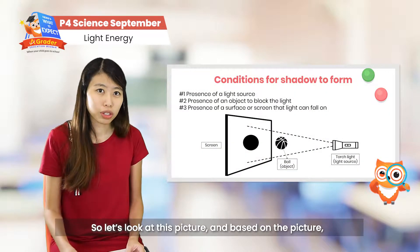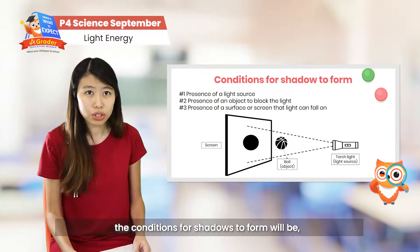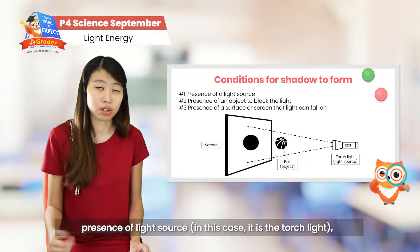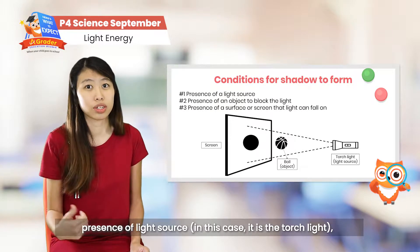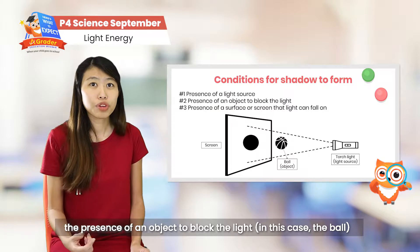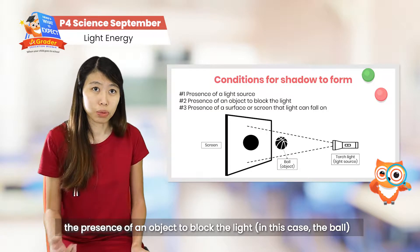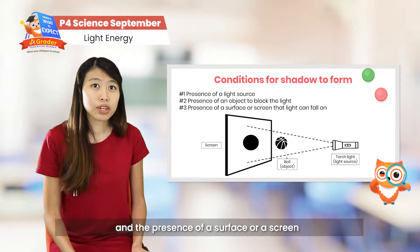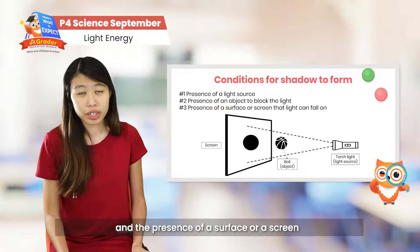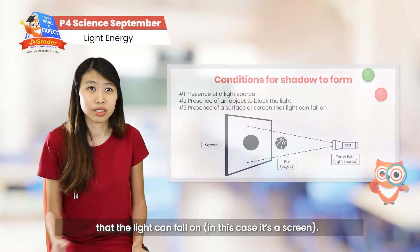Based on the picture, the conditions for shadows to form are: presence of a light source — in this case a torchlight; presence of an object to block the light — in this case the ball; and the presence of a surface or screen that the light can fall on — in this case it's a screen.